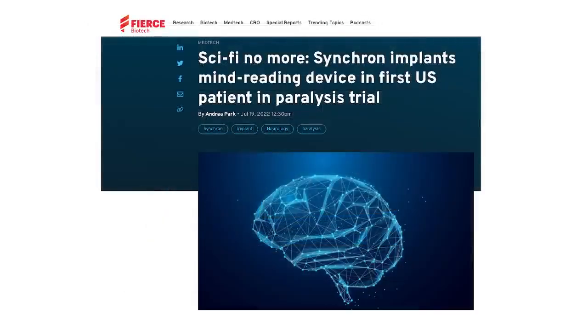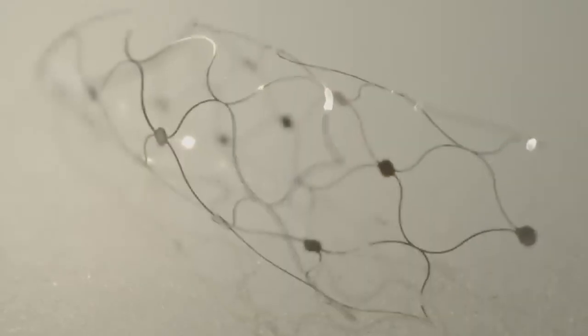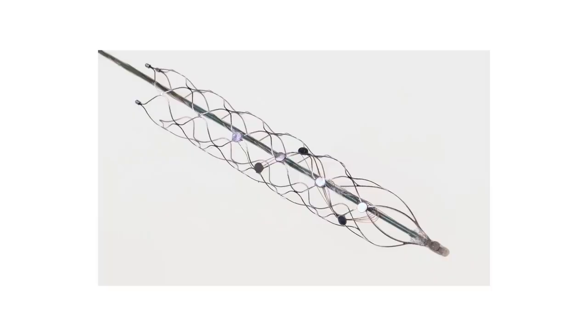The first US patient just received their stentrode implant and will be the first of six people involved in the $10 million study funded by the National Institutes of Health. To understand why Synchron crossed the threshold before Neuralink, we can look at the design of their implant. The stentrode is named after a common medical device called a stent.